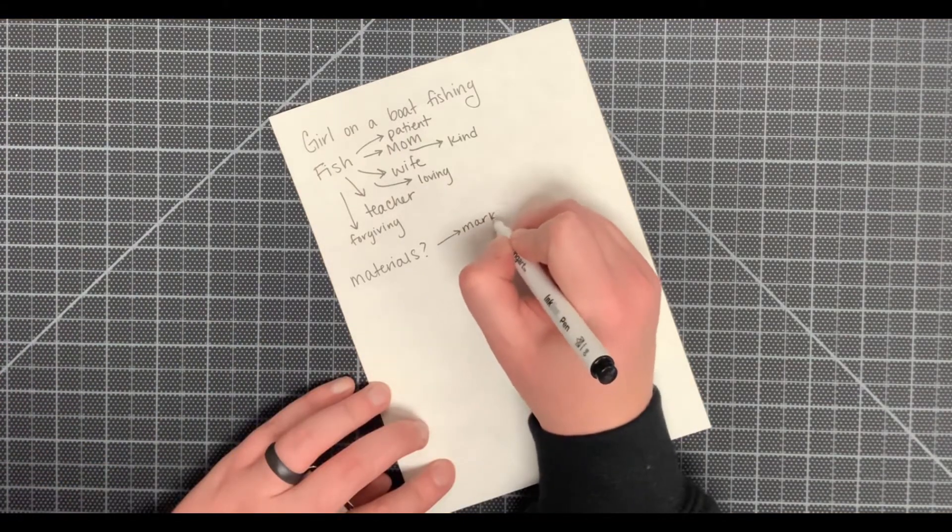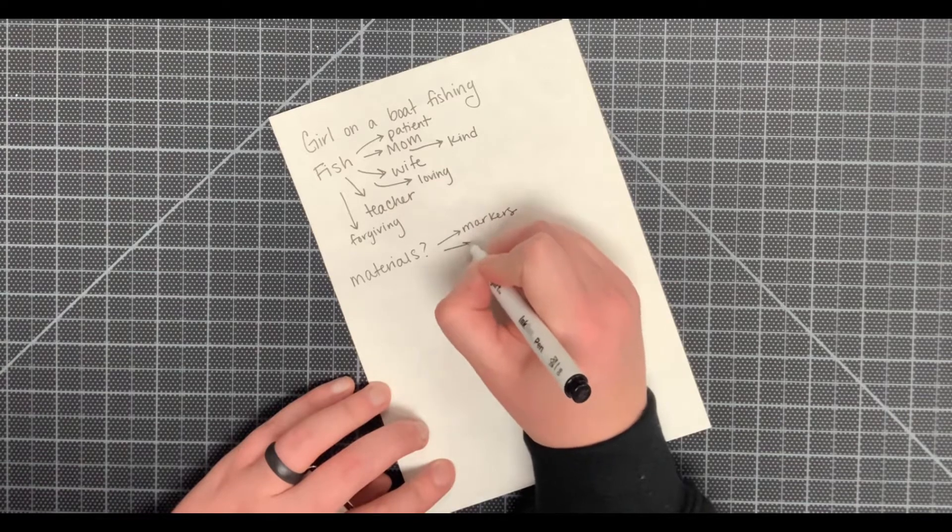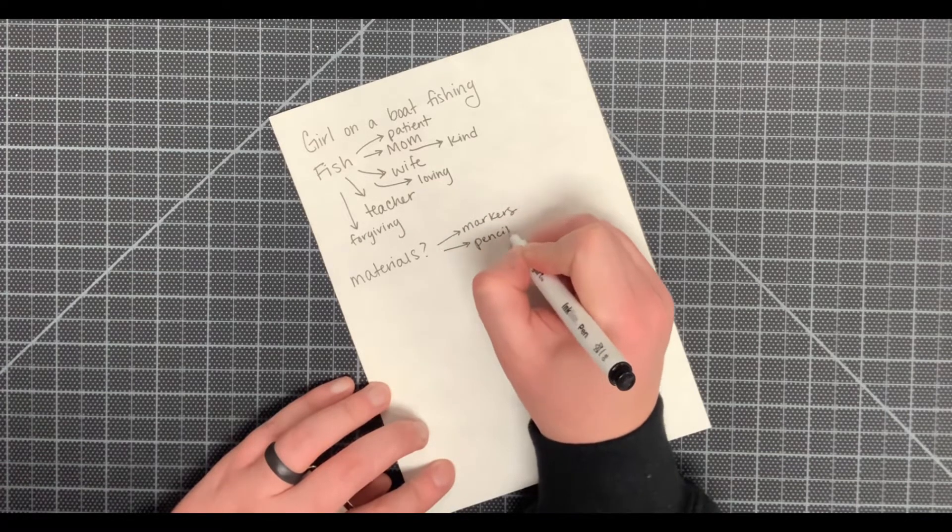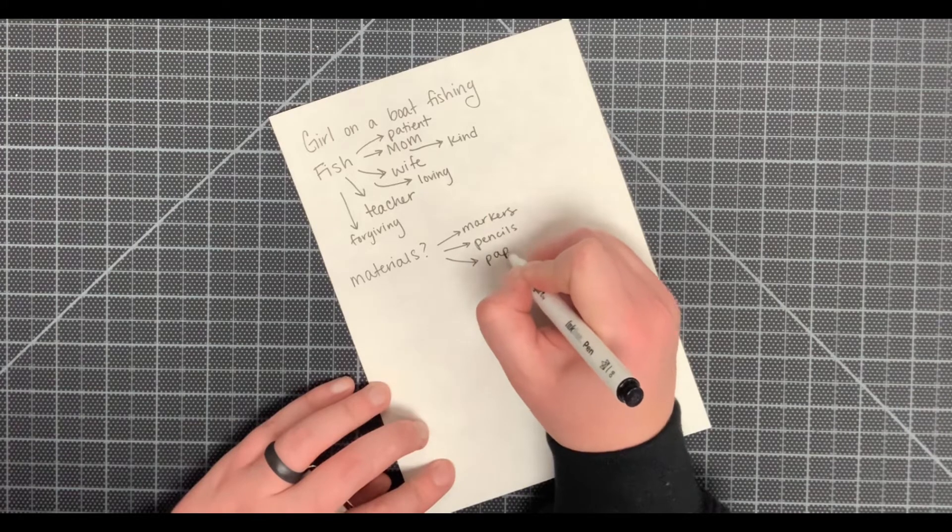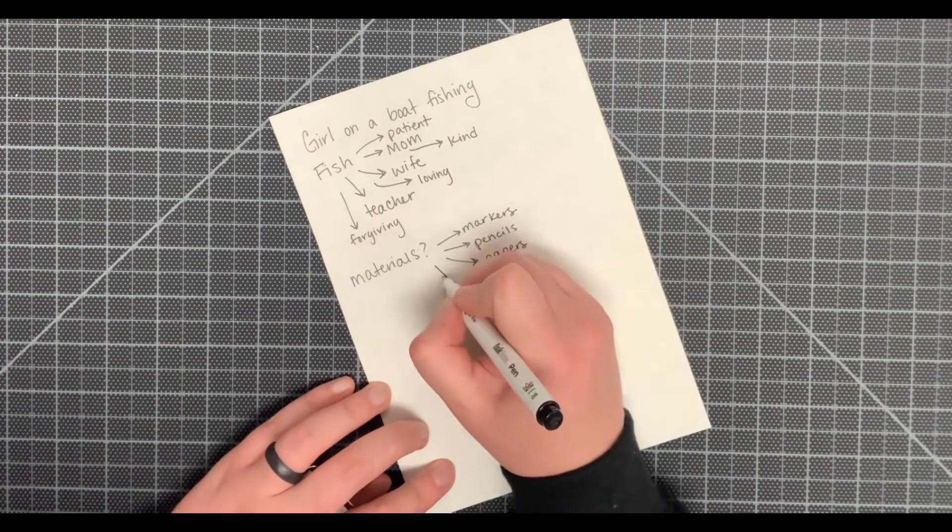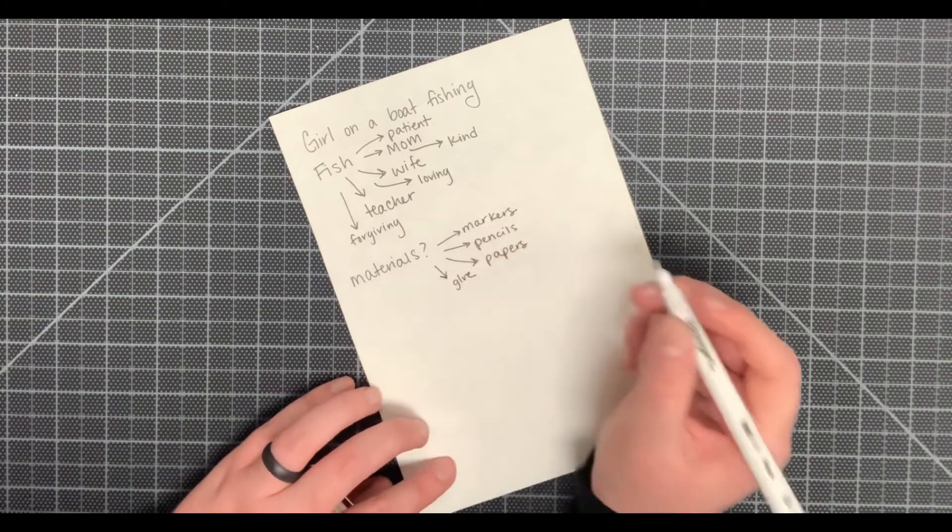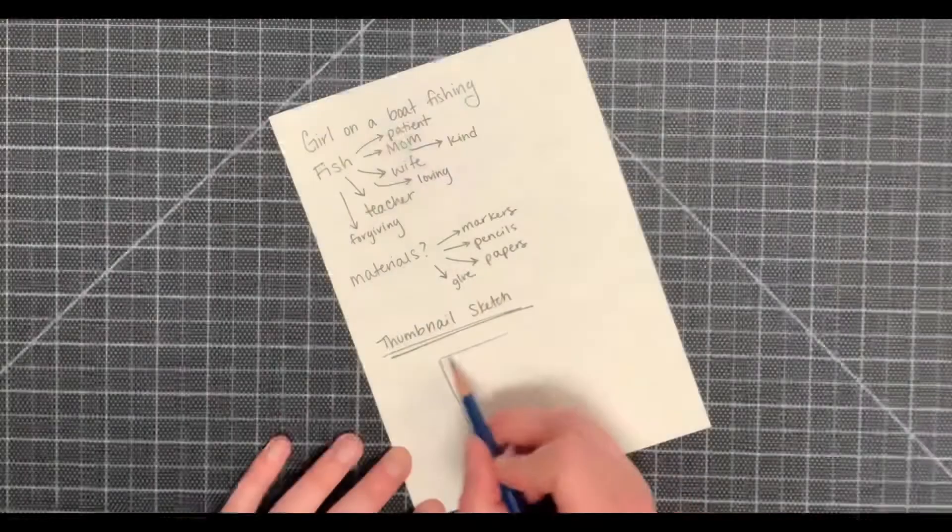After brainstorming how you plan to draw your chosen prompt, you have to think about what materials you're going to use to create your drawing. These can be any materials you have around your house. I'm going to be using probably some markers, pencils, paper, and glue because I'm going to be making a sort of collage.